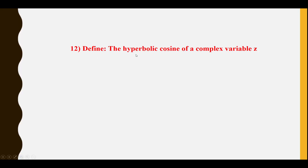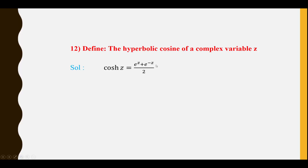Twelfth question: Define the hyperbolic cosine function of complex variable Z. cosh Z = (e^Z + e^(−Z)) / 2.